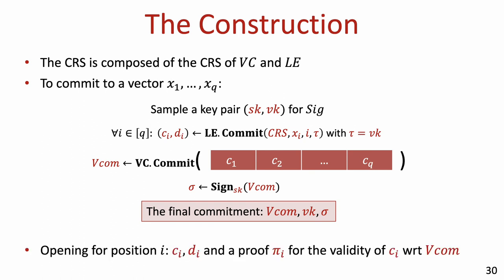To locally open this commitment at position i, one simply outputs the corresponding locally equivocable commitment ci, together with its opening di, and the proof pi that ci is indeed the i-th entry of the vector underlying VCOM. We won't see a complete proof for the non-malleability of this construction in this talk, but we'll see a high-level sketch of the main idea.